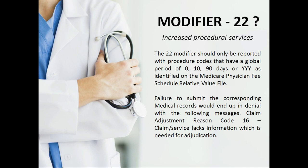Because modifier 22 indicates that the service was provided for more time than specified, we need to submit relevant documentation to prove to the insurance company why the procedure was extended. The insurance company will then pay 20 to 30% more than the actual allowed amount. Whenever we append modifier 22, relevant documentation is a must — otherwise the claim will be denied for lack of information.